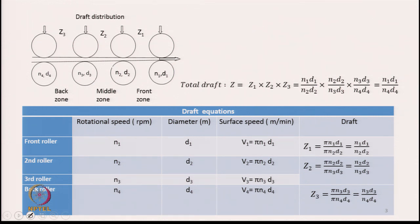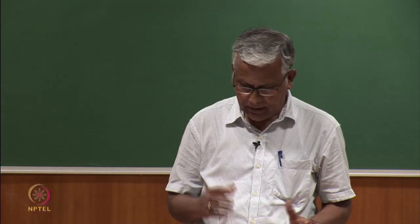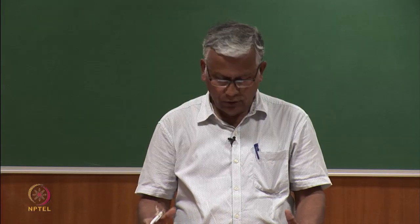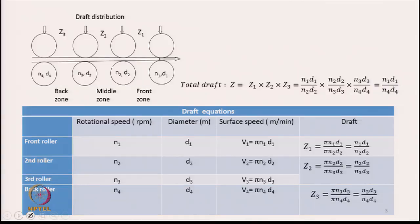Let us look at a simple drafting device consisting of 4 pairs of rollers. There are 3 drafting zones, with a draft of Z1, Z2, and Z3 in each zone. Though modern machines mostly have 2 zones only, let us start with this simple machine for understanding. In the table, column 1 shows the rotational speed of the rollers, column 2 the diameters, and column 3 the surface speeds.